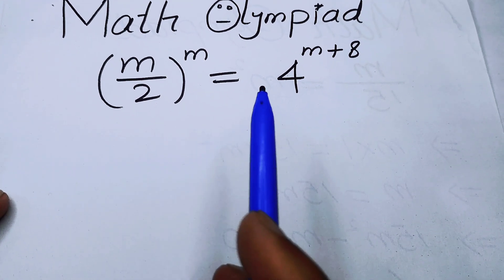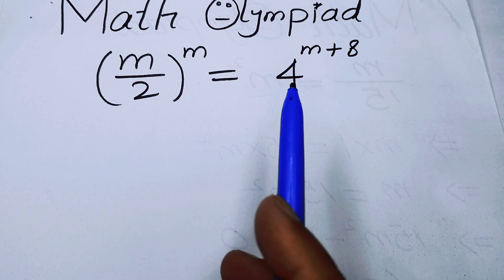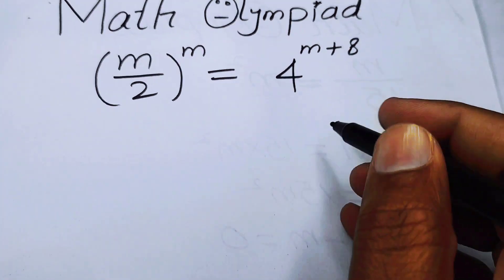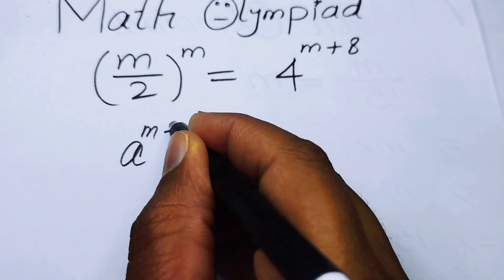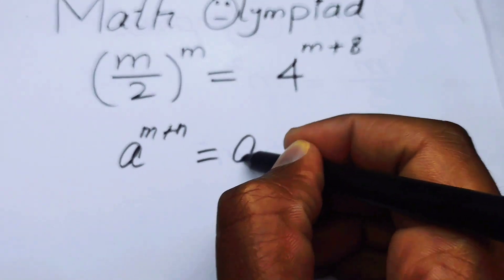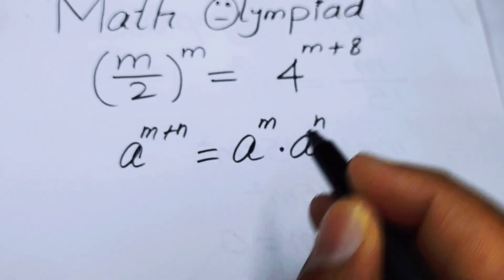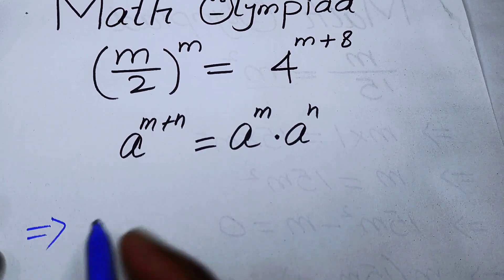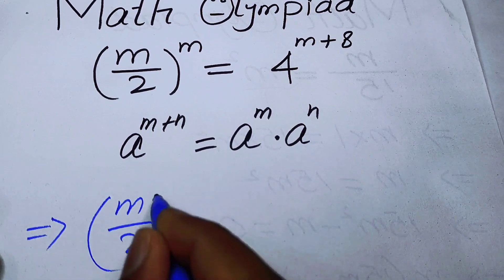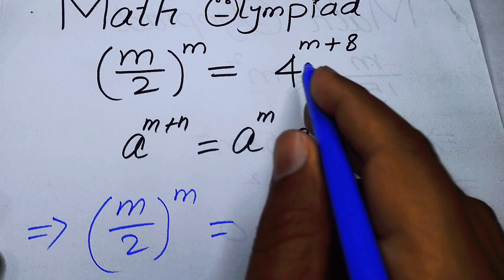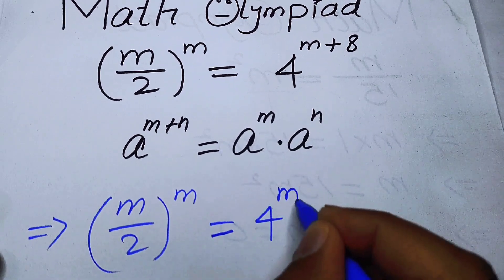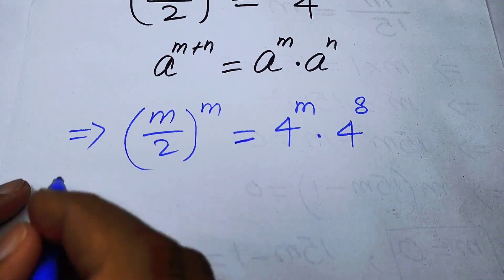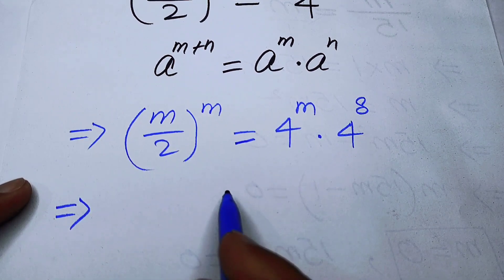First, focus on the right-hand side. We will apply the exponent law: a^(m+n) = a^m · a^n. Applying this to the right-hand side, we can break the exponent and write it as 4^m times 4^8.